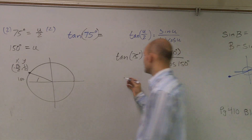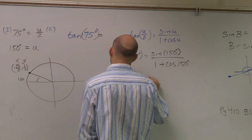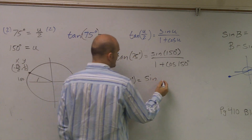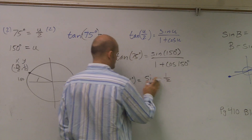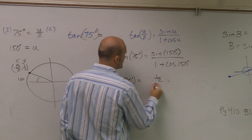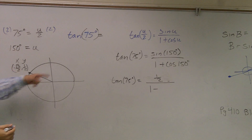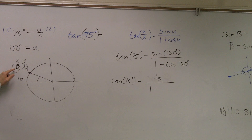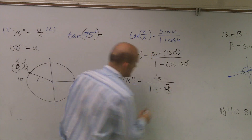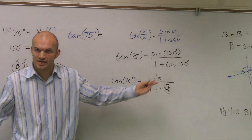Remember, cosine is my x value and sine is going to be my y value. So now you just plug it in. Tangent of 75 degrees equals sine of 150, which is 1 half, all over 1 plus — well, since cosine of 150 is negative radical 3 over 2, it's 1 plus negative radical 3 over 2. But I can rewrite that as a subtraction problem — plus a negative is the same as subtraction.